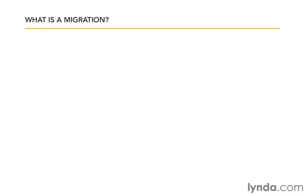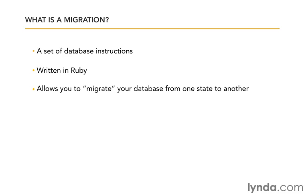So you're probably wondering, what in the world is a migration? Well, a migration is simply a set of database instructions. It's going to be written in Ruby, and they're going to allow us to migrate our database from one state to another. They're going to essentially describe the changes that should take place in our database.